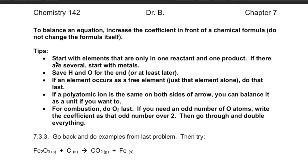There are a few tips that might help. If you have elements like hydrogen and oxygen that appear in pretty much everything in the equation, save those for the end. Because if you balance your hydrogen and then change something else, it'll be out of balance again. Also, if an element occurs just as the element — like lithium in the last example — you might want to do that one last, because the need for it may change again. If you have a polyatomic ion that's the same on both sides of the arrow, like a nitrate ion, you can balance it as a unit instead of balancing nitrogen and oxygen separately.